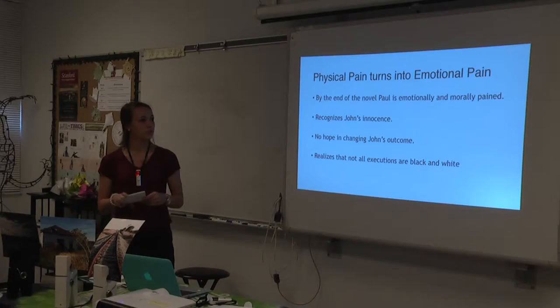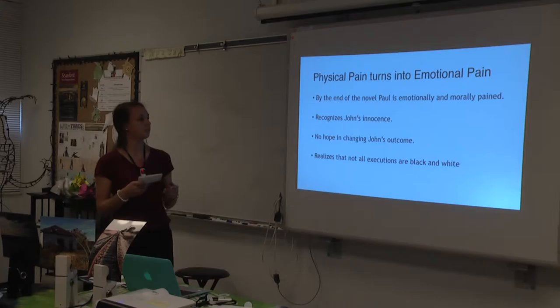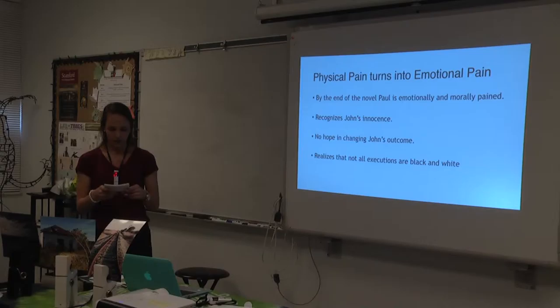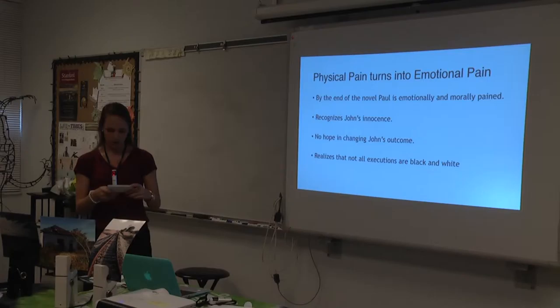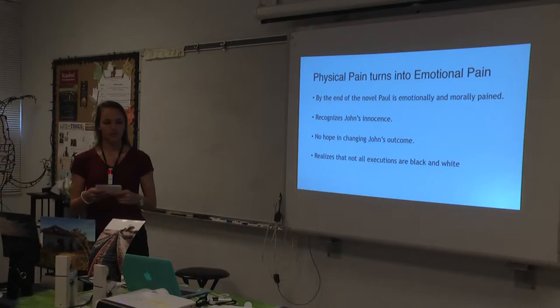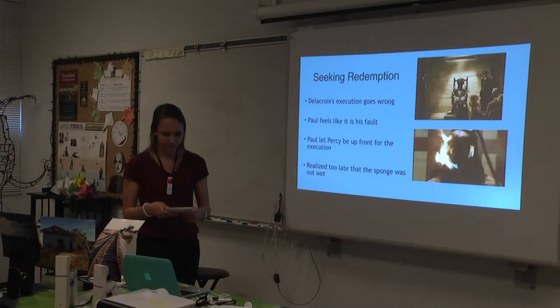His physical pain from the beginning transforms into emotional pain. By the end of the novel, Paul is emotionally and morally in pain because he realizes that John is in fact innocent. He becomes very troubled because he does not feel he can do anything to change John's outcome — he still has to walk the mile. He also realizes that not all executions are black and white; some are gray, because John is walking the mile but is innocent.